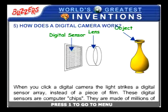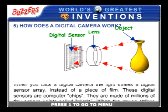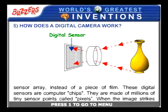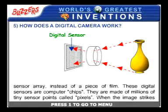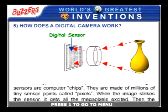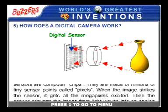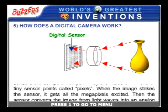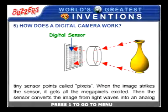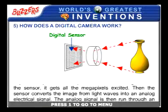When you click a digital camera, the light strikes a digital sensor array instead of a piece of film. These digital sensors are computer chips made of millions of tiny sensor points called pixels. When the image strikes the sensor, it gets all the megapixels excited.